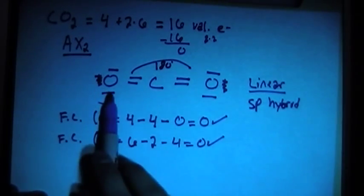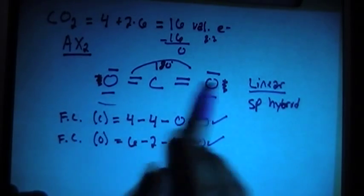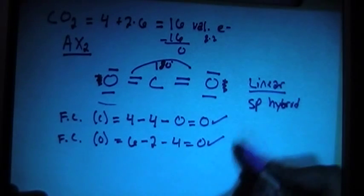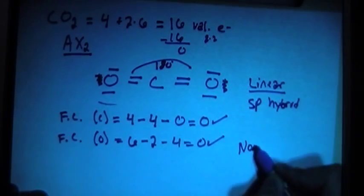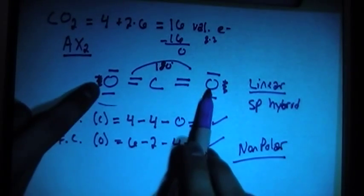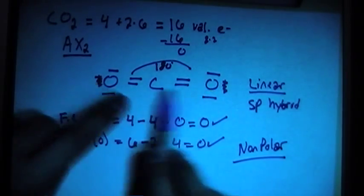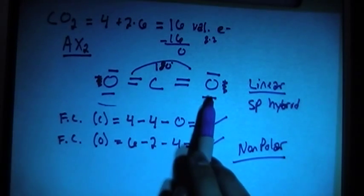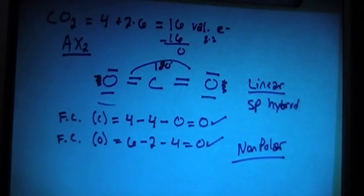And because both of these two exterior atoms are the same, this is actually going to be a non-polar molecule because these two atoms here are the same. So they're going to pull on the electrons equally due to their electronegativity. It's going to distribute the charge evenly across the molecule.